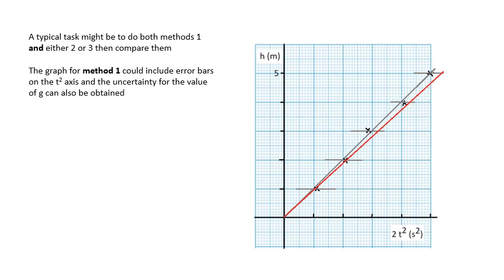One good thing about method one is that there's so much uncertainty it's a great opportunity to draw error bars. You'll have quite big error bars on the t-axis — maybe 20% uncertainty, and since you're using ½t² you're doubling it, giving huge uncertainties. You can do your line of best fit to get a value of g, then draw the maximum or minimum gradient to get the uncertainty in g.